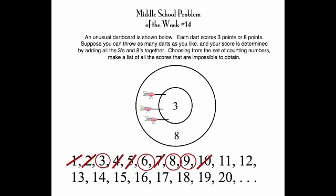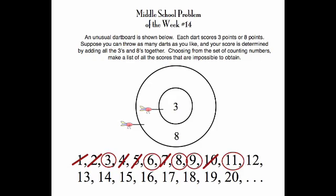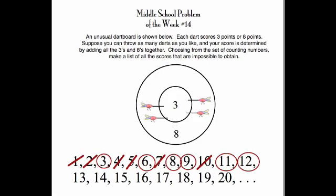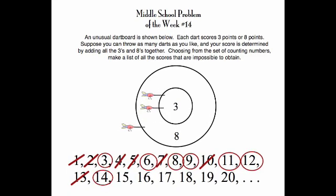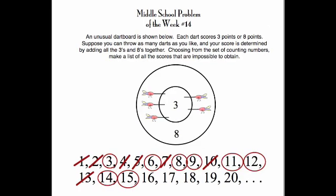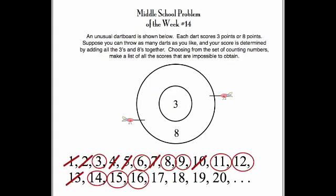There's no way to score ten, but an eight and a three would make eleven. Four threes make twelve, but no way to score thirteen. An eight and two threes make fourteen. Five threes make fifteen. Two eighths make sixteen.